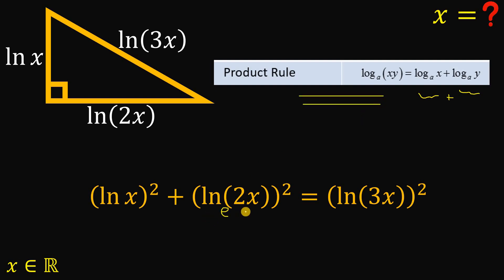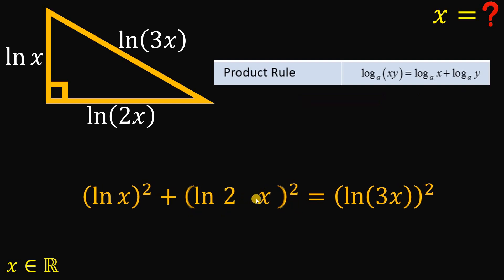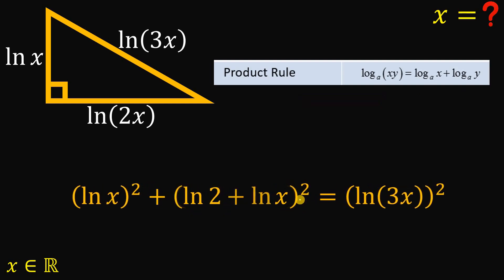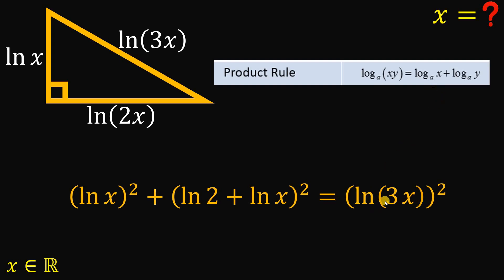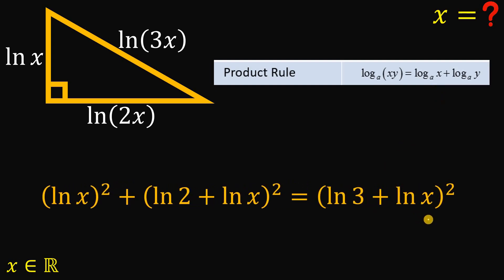So ln of 2x raised to the power of 2 — we can expand this into (ln 2 + ln x)². And ln of 3x, using this property, we can write as ln 3 + ln x.